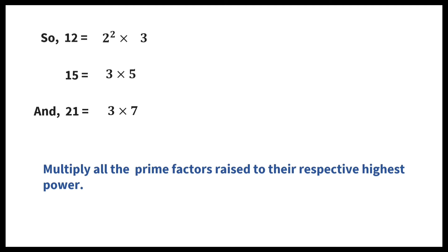To find the LCM, multiply all the prime factors raised to their respective highest power. So, LCM is equal to all the prime factors. You have to write 2 squared times 3 is present in all the numbers times 5 times 7, which is equal to 420.